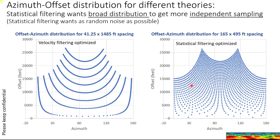You may have seen azimuth offset distribution plots for these two different theories. Velocity filtering optimized has tight spacing within a line but farther line spacing. The number two approach, which is more statistical filtering optimized, spreads out the data more so your offsets and azimuths are more distributed. And this is what statistical filtering wants.